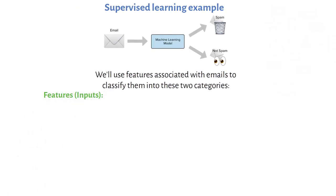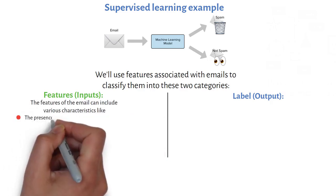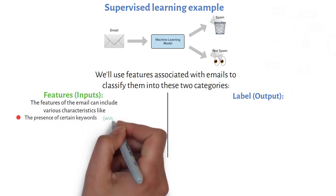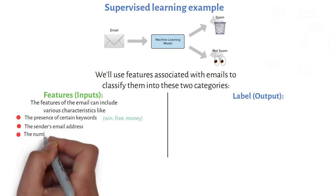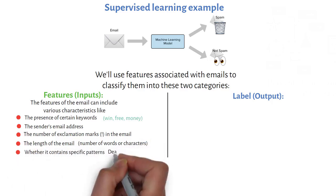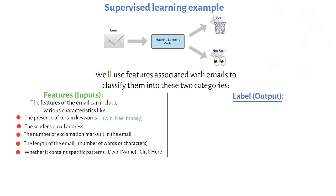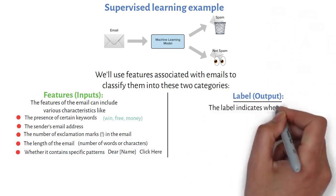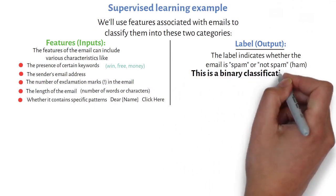Features — inputs: The features of the email can include various characteristics like the presence of certain keywords, for example, 'win,' 'free,' 'money,' the sender's email address, the number of exclamation marks in the email, the length of the email (number of words or characters), and whether it contains specific patterns like 'dear name' or 'click here.' Label — output: The label indicates whether the email is spam or not spam (ham). This is a binary classification problem.